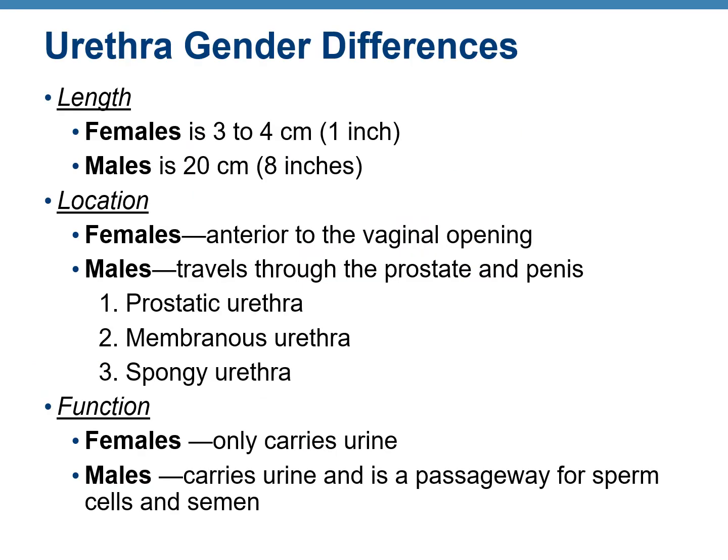There are structural and functional differences in the urethra between males and females. Regarding length: the urethra is longer in males — about 20 centimeters — compared to females, where it is about 3 to 4 centimeters. Regarding location: in females the urethra opens anterior to the vaginal opening, while in males it travels through the prostate gland and through the entire length of the penis. In males, the urethra has three regions: the prostatic urethra, the membranous urethra, and the spongy or penile urethra.